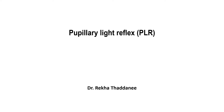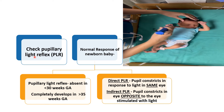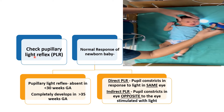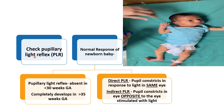Hello everyone. We have to check the pupillary light reflex. For this we have to shine the torch light from the peripheral visual field and we have to see the pupillary constriction in response to the light in both the eyes. The pupillary light reflex is absent in less than 30 weeks of gestational age and completely develops in more than 35 weeks.